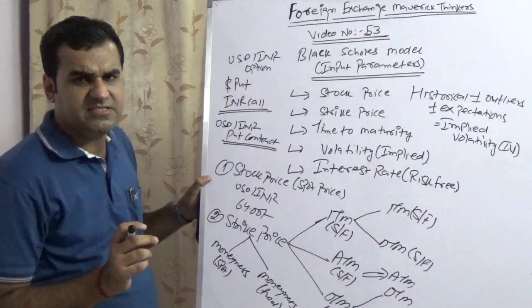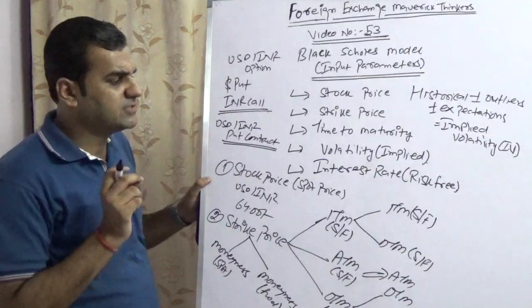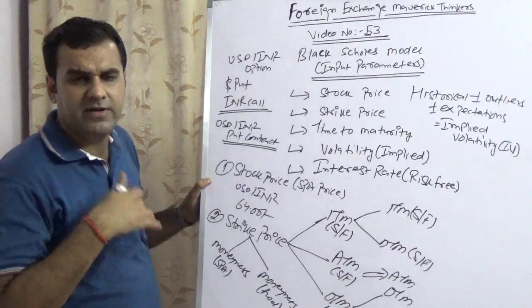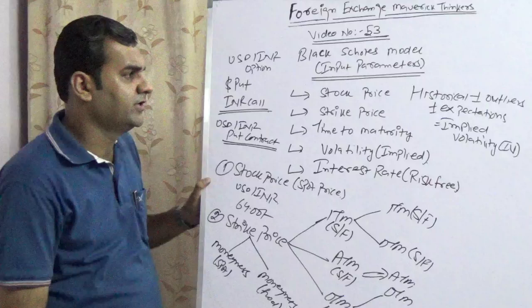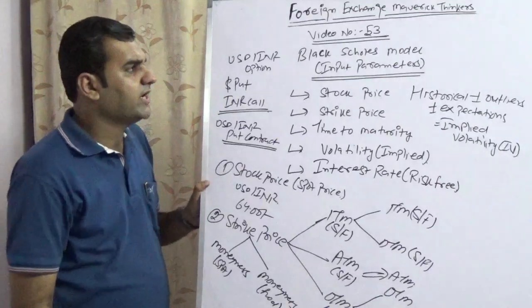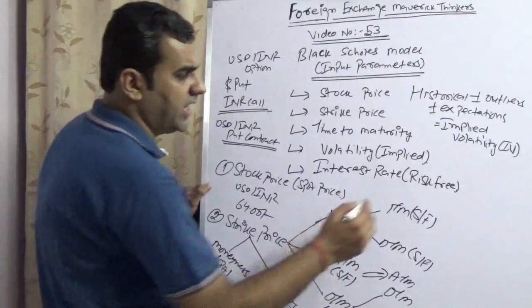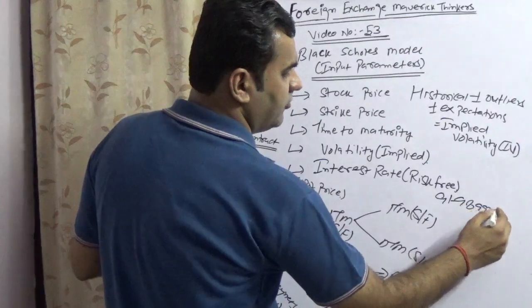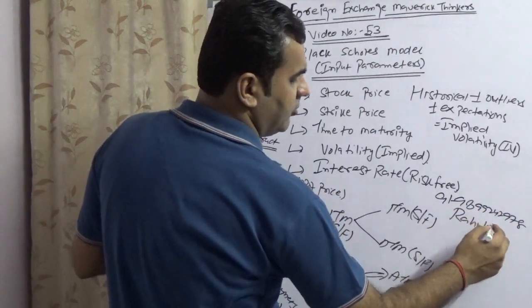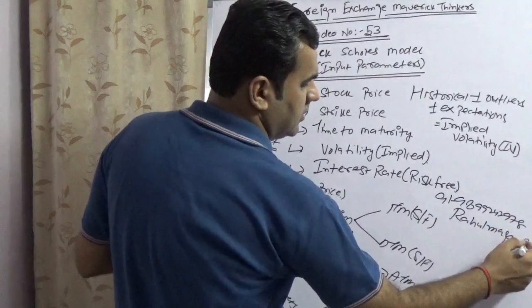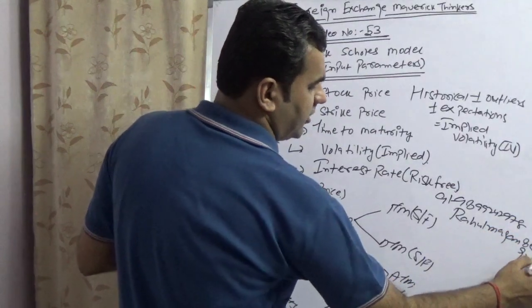I am again stressing the fact that these are the Black-Scholes parameters as per currency, but not as per stock. Because for stock, one thing would come, which is known as dividend. You are most welcome to contact me at 9198-99-242-978. You are welcome to email me at rahulmughan8@gmail.com.